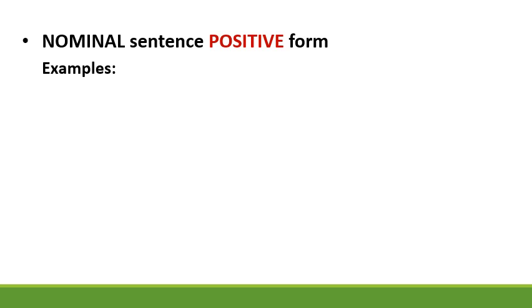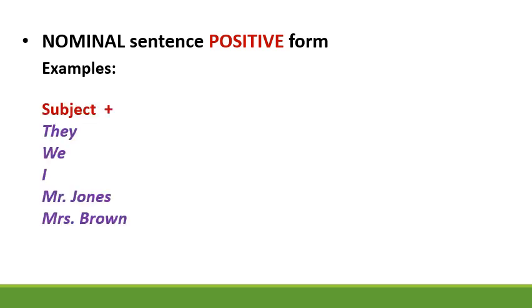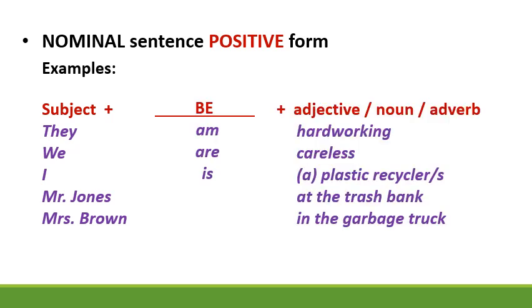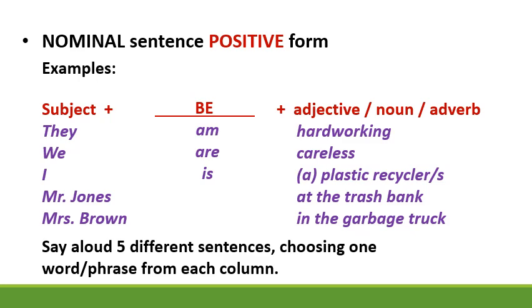Here are some examples of a nominal sentence positive form. Subjects: they, we, I, Mr. Jones, Mrs. Brown. Be: am, are, is. Adjectives, nouns, and adverbs of place: hard working, careless, a plastic recycler, at the trash bank, in the garbage truck. Say aloud five different sentences, choosing one word or phrase from each column. For example: Mr. Jones is hard working. Now it's your turn — you have one minute.